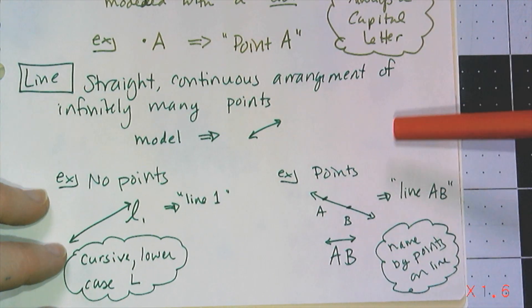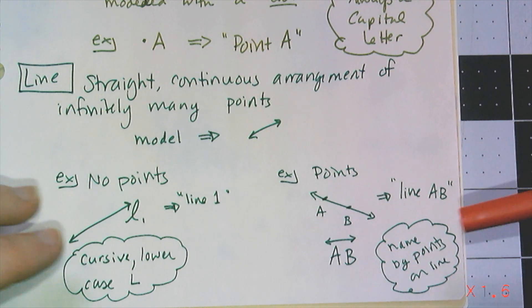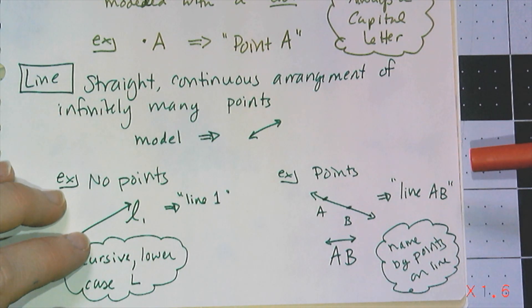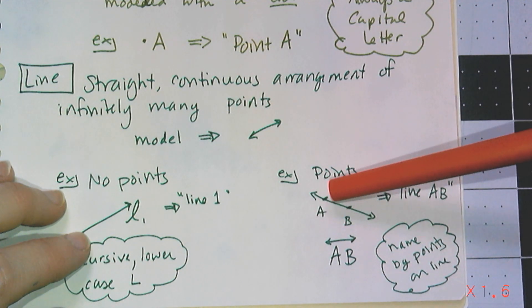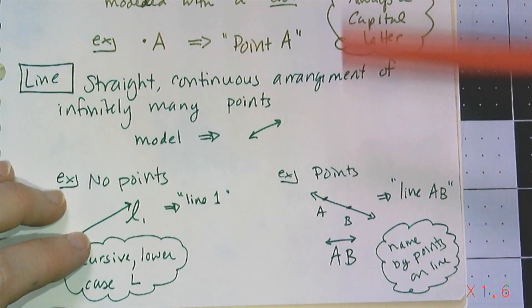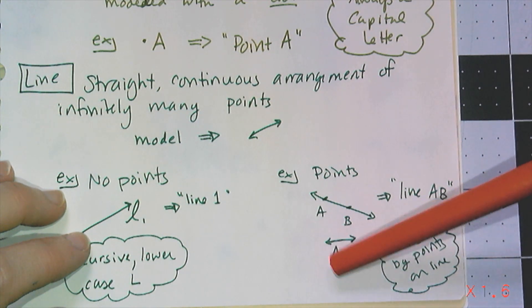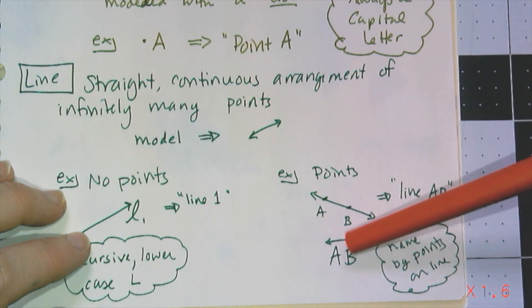If the line contains named points, I can name the line by the points. This example has A and B on it, so I would call this line AB or line BA, the order doesn't matter. The way I would write it is to use the capital letters A and B, then put the line symbol over it.